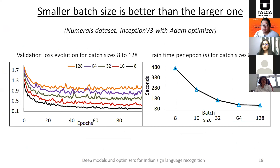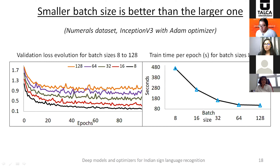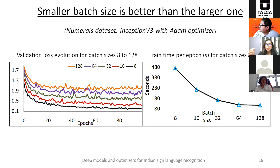For the batch size results, I show two graphs of validation loss evolution over 100 epochs. The lowest loss is achieved by batch size 8 — shown in black — and as batch size increases, loss also increases. There is a trade-off with speed: larger batch sizes train faster, but since our priority is recognition accuracy, we prefer batch size 8.